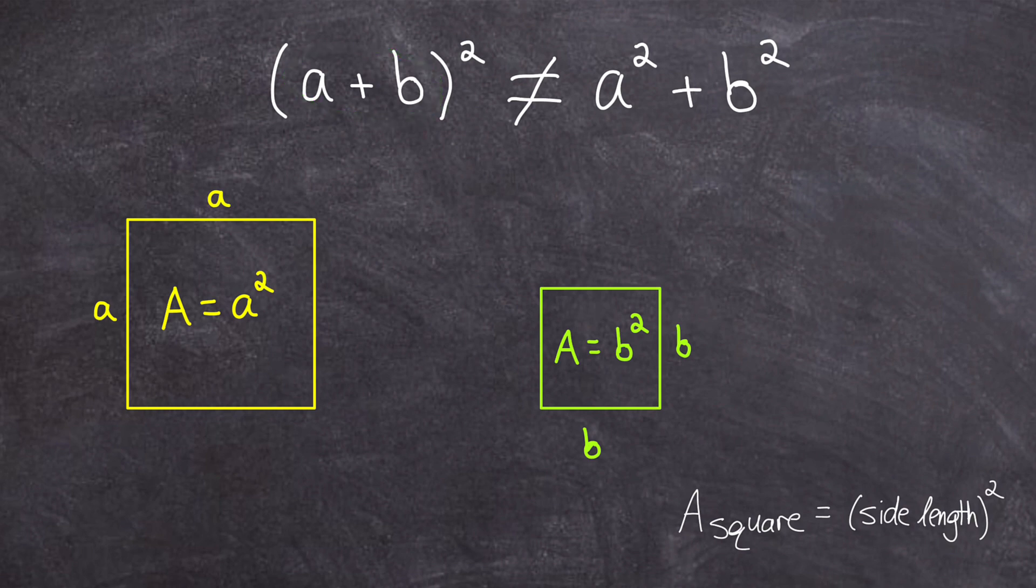So to make a square with a side length of a plus b, let me start with this square, which has a side length of a, and then let me just extend it in all directions by b. So I'll extend it that direction, in that direction and then make it into a square.